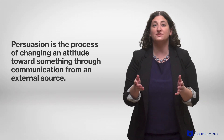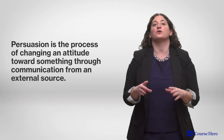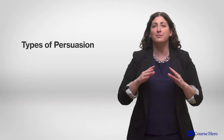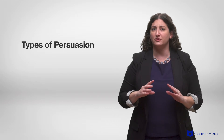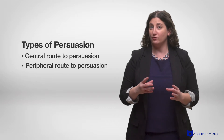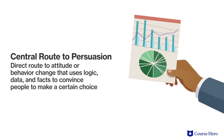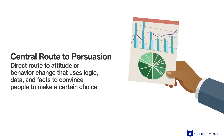Attitudes can also be changed by persuasion — the process of changing an attitude towards something through communication from an external source. There are two main strategies used to persuade others: the central route and the peripheral route. The central route of persuasion is a direct route to attitude or behavior change that uses logic, data, and facts to convince people to make a certain choice. It works best when the target of persuasion is likely to focus on the information presented and evaluate it carefully.